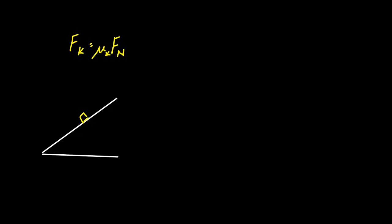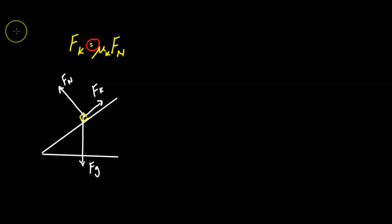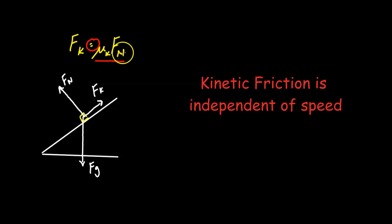If there was friction and the object was sliding, you'd also have a normal force FN and kinetic friction. Kinetic friction is always equal to the coefficient of friction times the normal force, regardless of speed — whether it goes fast or slow. The coefficient of friction depends on the material of the surface, and the normal force depends on how hard the two surfaces are pressed against each other.